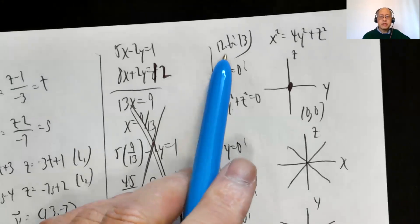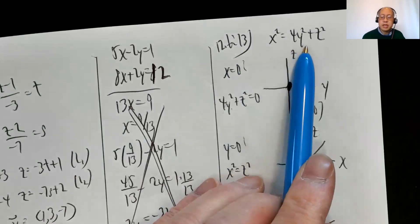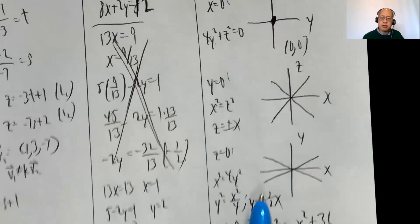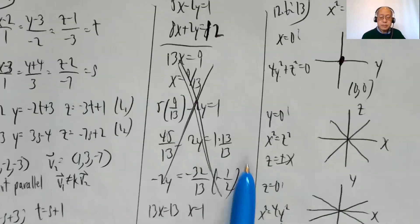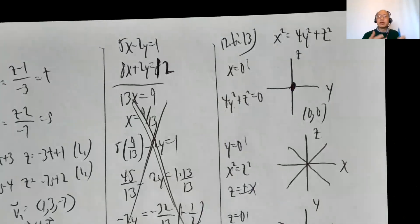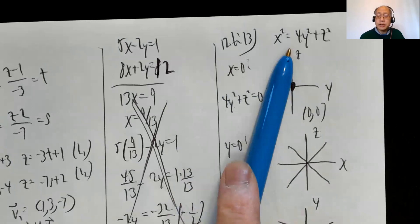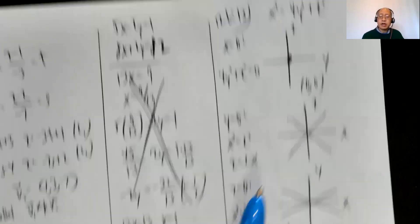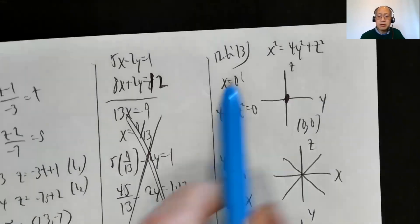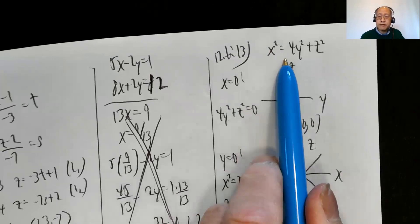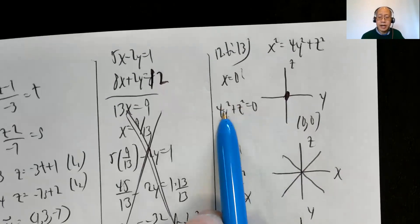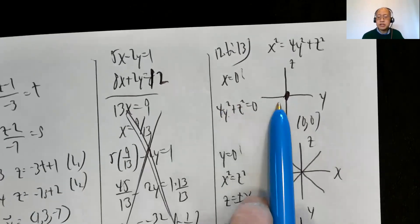Problem 13: X² = 4Y² + Z². For the YZ plane (X = 0): 4Y² + Z² = 0, which means both Y and Z must be 0, so the trace is just the origin. For the XZ plane (Y = 0): X² = Z², so Z = ±X — lines with slopes of 1 and −1. For the XY plane (Z = 0): X² = 4Y², giving Y = ±½X — lines with slopes of ½ and −½.